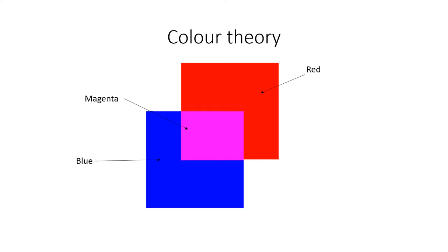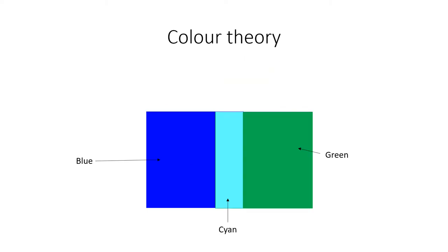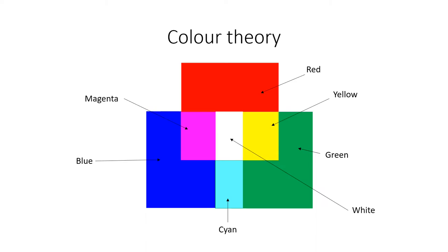Similarly, if we add red and blue light, we create magenta. If we add blue and green light, we create cyan. Finally, if we add red, blue and green, we can create white light. By varying the depth of color, known as the saturation, then a wide range of colors can be produced.